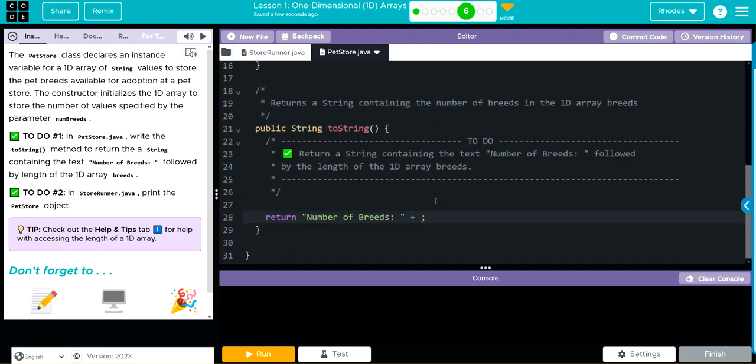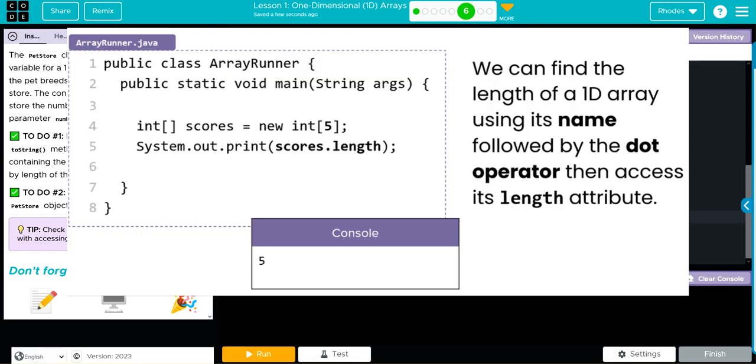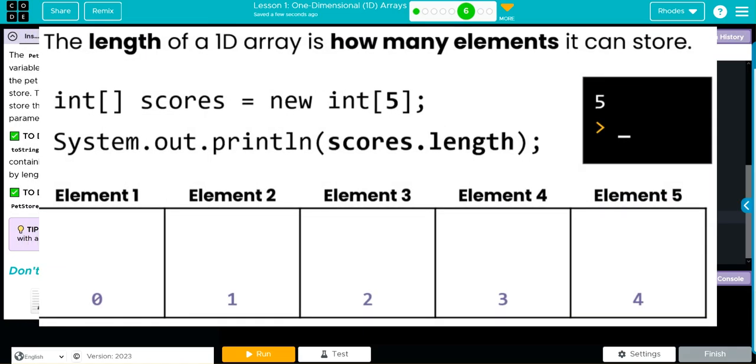Number of breeds, then concatenate. We need to get the breeds array from above. To do that, we just call that variable. But we can't just get the array right now; that's going to come up in a couple of lessons. What we want to get is the length.